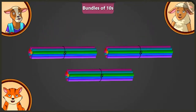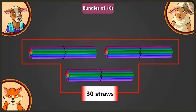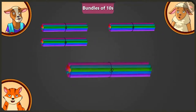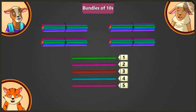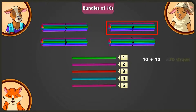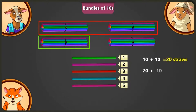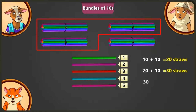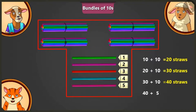Well done, Lily. Since Lily needs forty-five straws and there are thirty straws here, she is asked how many more to add. She says: add one more bundle of ten straws and keep five straws. Counting up: ten and ten is twenty, twenty and ten is thirty, thirty and ten is forty, forty and five is forty-five straws in total.